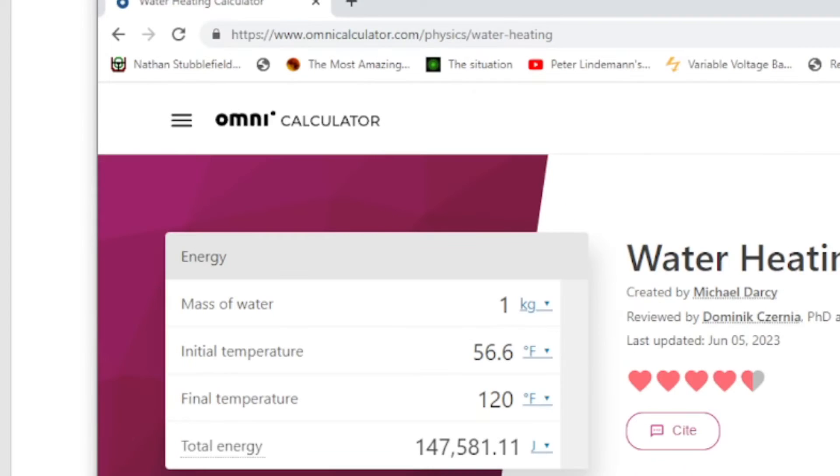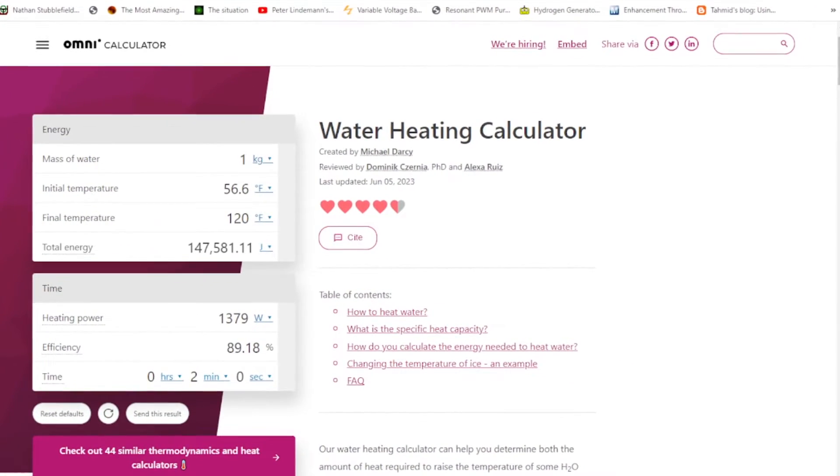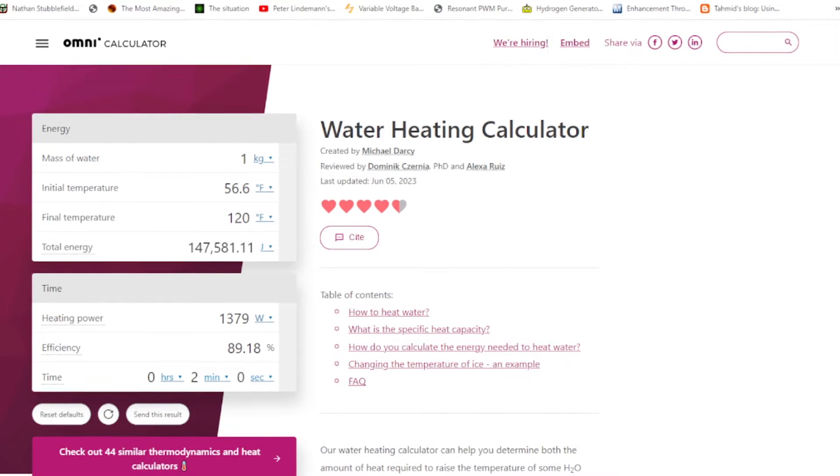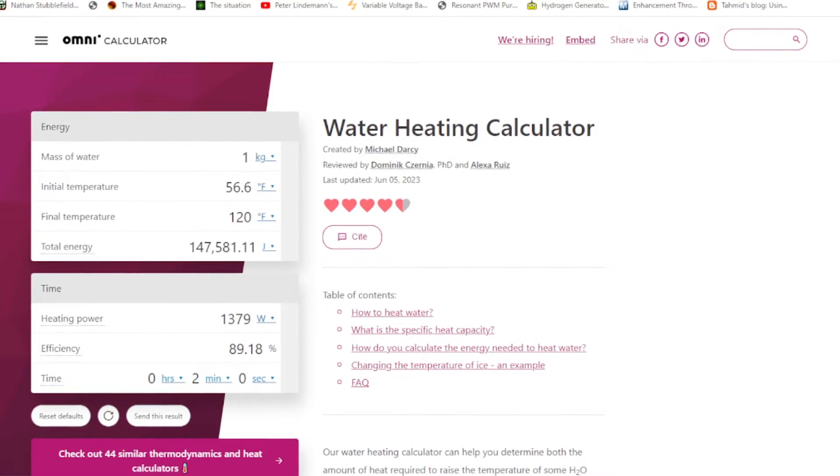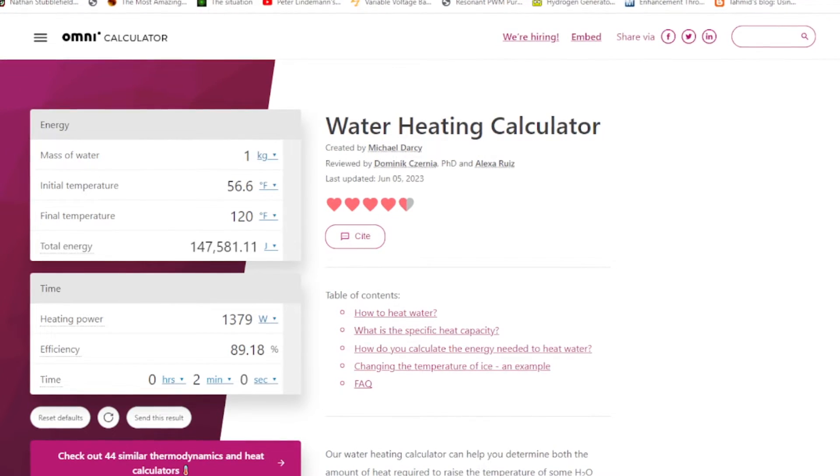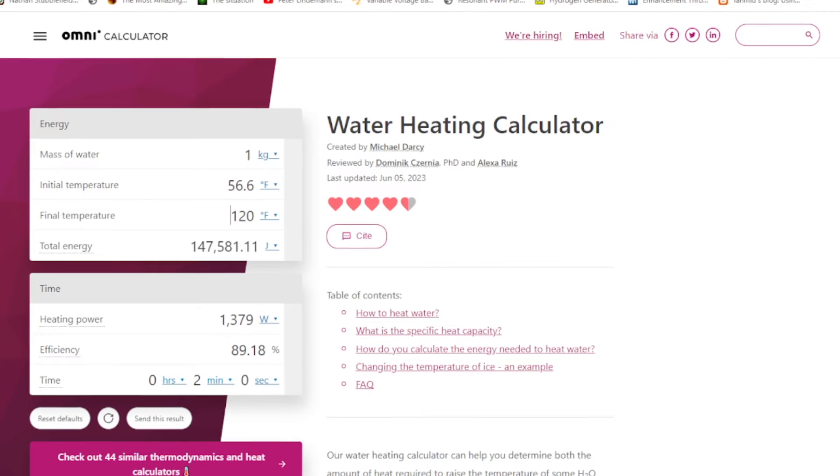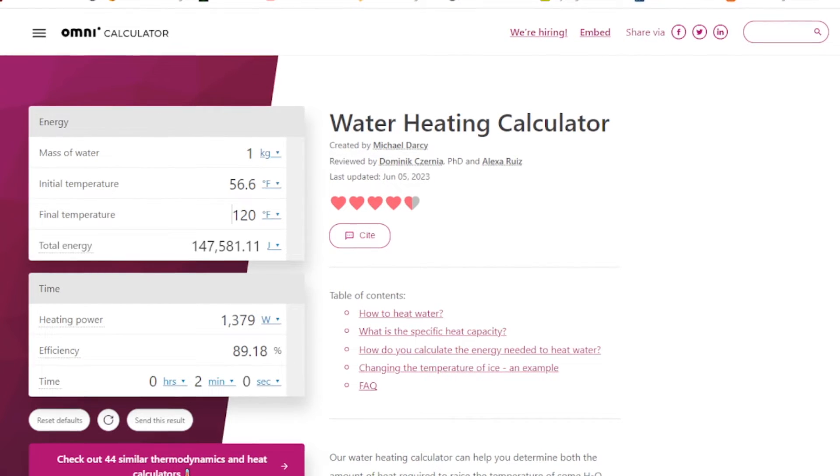We can just use this online calculator. We have one liter, which is one kilogram of water, and we just put our initial temperature and our final temperature, and 1379 watts. So we would have 89% efficient.